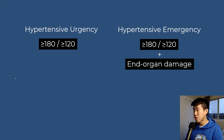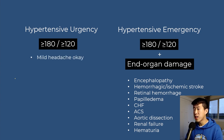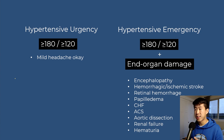Some examples of end organ damage include encephalopathy, stroke, retinal hemorrhage, papilledema, congestive heart failure, acute coronary syndrome, aortic dissection, renal failure, etc. With hypertensive urgency you can actually have a mild headache, and that's not going to be a sign of end organ damage. It's only really going to be a concern if it's a severe headache suggesting stroke, or if they're encephalopathic and altered, that you'd consider it end organ damage.